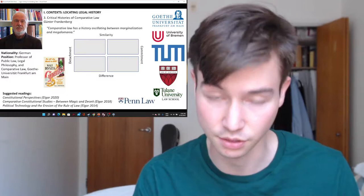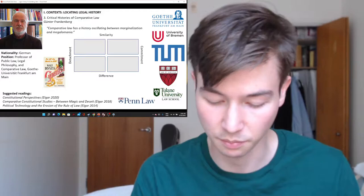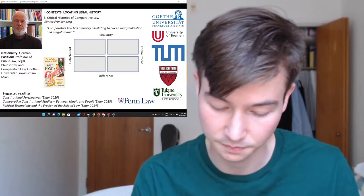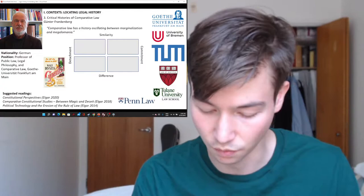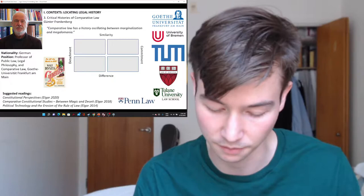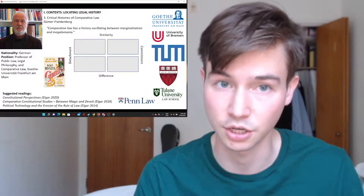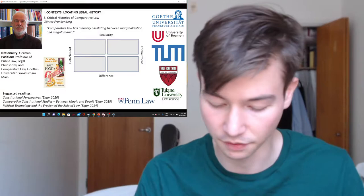In this section, Critical Histories on Comparative Law, he opens with the quote: 'Comparative Law has a history oscillating between marginalization and megalomania.' It's been a movement resonating between a minority complex and delusions of grandeur, causing an unstable self-image. Therefore, the discipline of comparative law has been at unease, and he will provide a critical approach to address this — which might serve as therapy — and that is the aim of this chapter.